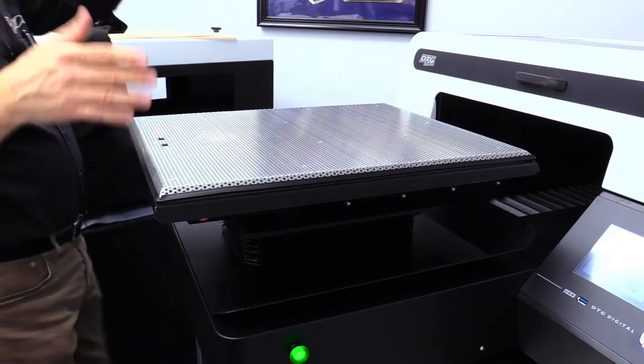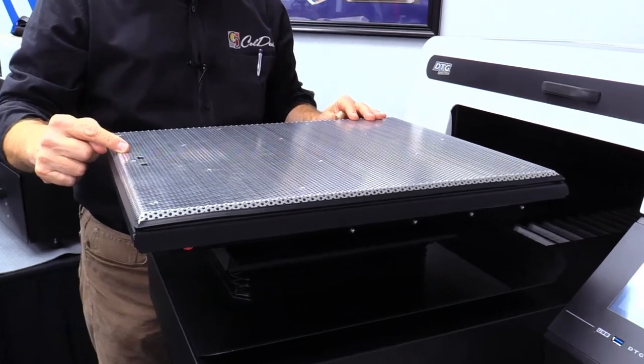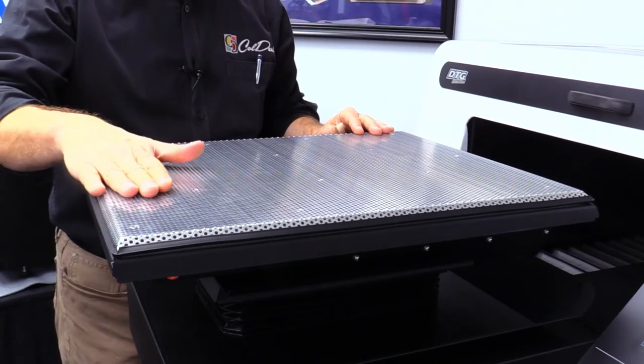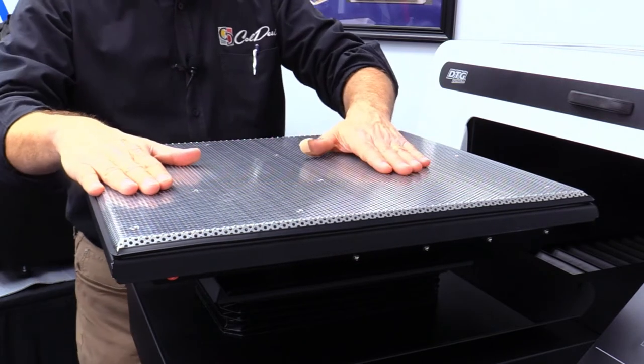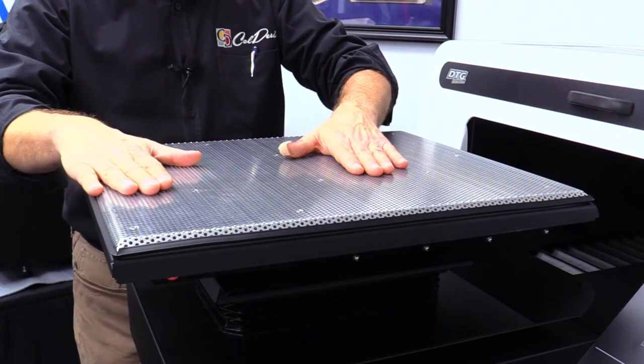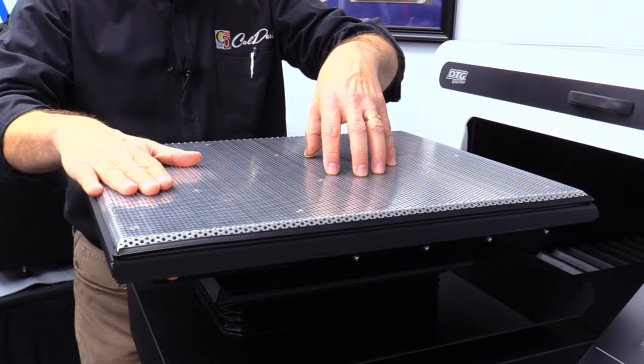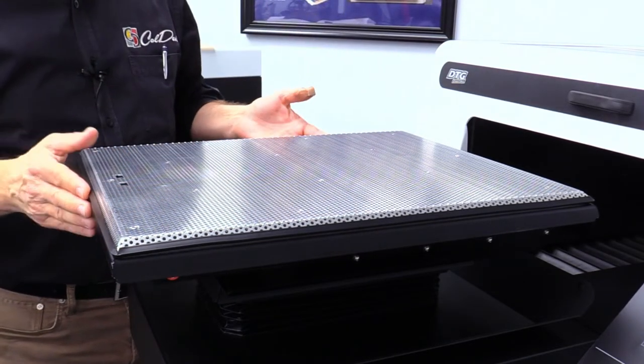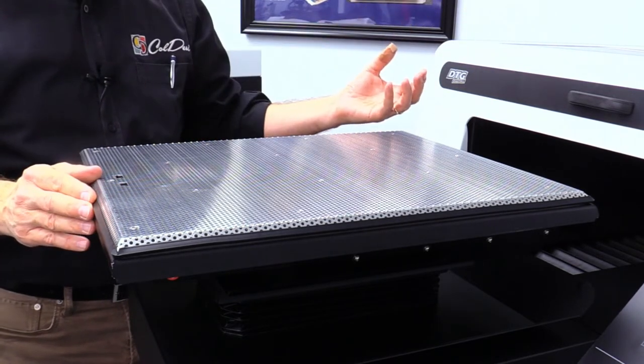Now the way that works is there is a sensor. There's two open holes right here. And if I cover it with my hand, you can hear that the vacuum gets turned on. And what that's doing is it's not only sucking air down here so it holds the shirt in place, but when it goes into the printer, the fan is still going, so it actually sucks the ink down into the shirt.